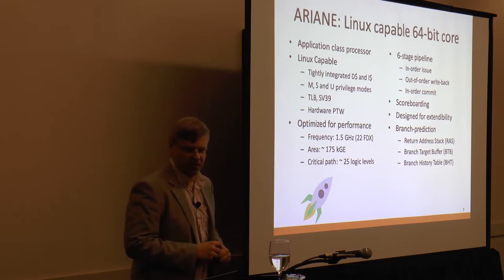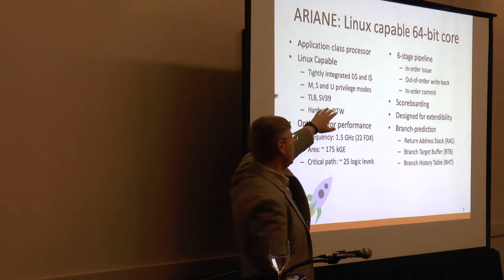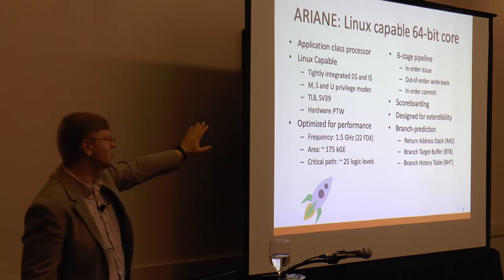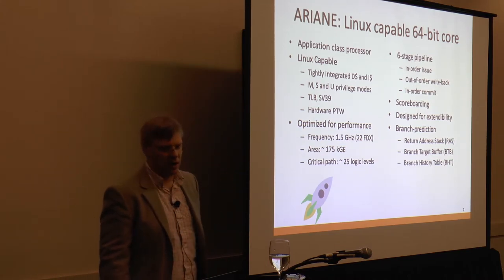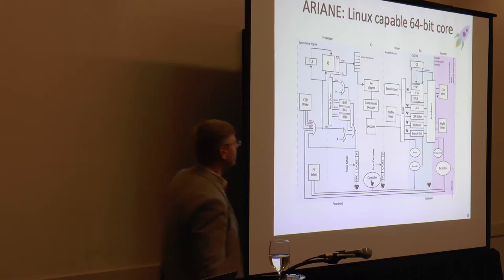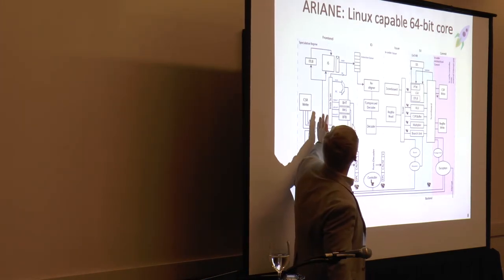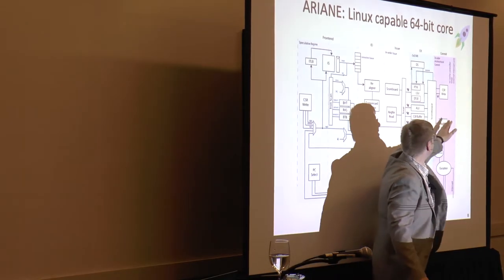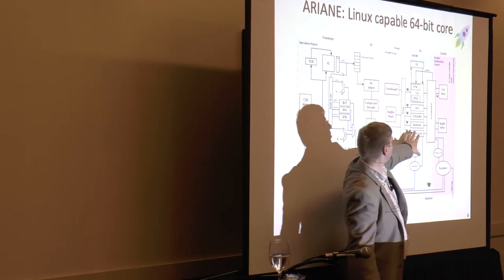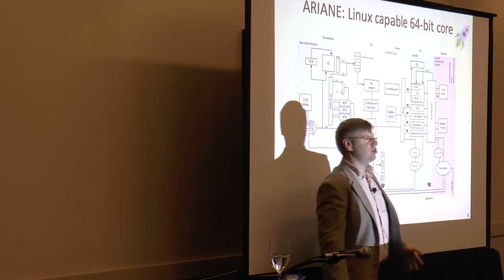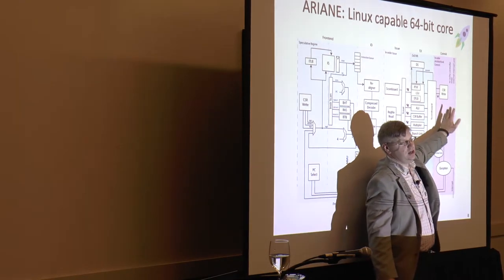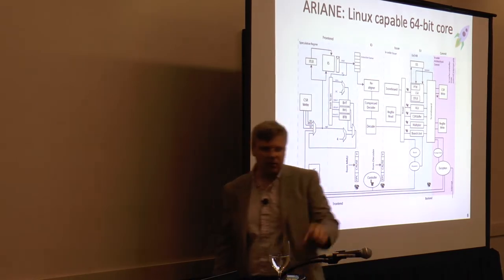Ariane has a six-stage pipeline: a two-stage front end, then issue, decode, execute, and write-back stages. One thing you might notice that's a little different from a traditional five-stage MIPS core is that their memory system is actually a little out-of-order. They have six-stage pipeline, in-order issue, out-of-order write-back — which saves them something — and in-order commit. So it's an in-order processor with a little bit of out-of-order memory system, and they have branch prediction.